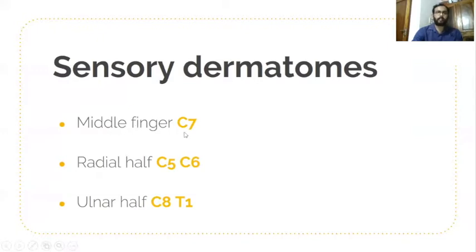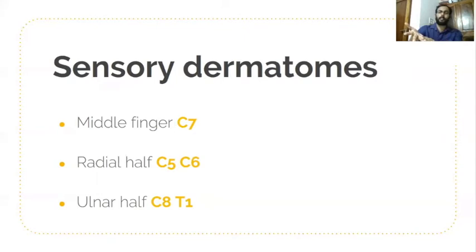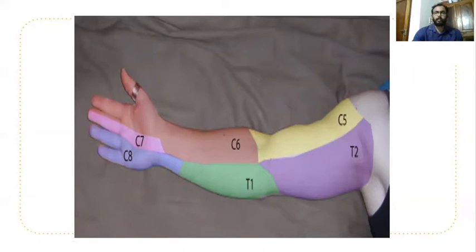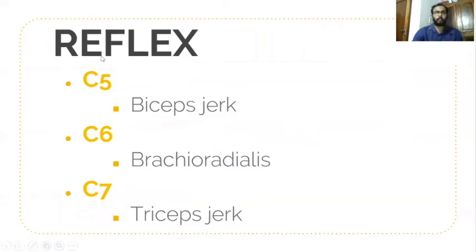For the sensory dermatomes, an easy way to learn: the middle finger is C7; the radial half is C5 and C6; the ulnar half is C8. By seeing this picture — C7 is the middle finger, C5 and C6 on the radial side, and C8 on the ulnar side — it can be learned very easily.